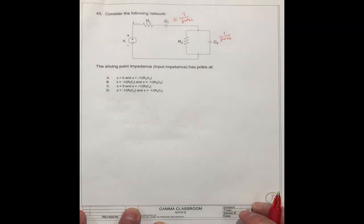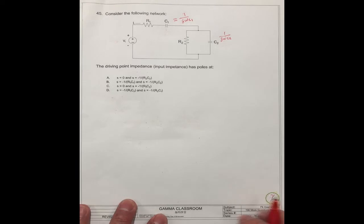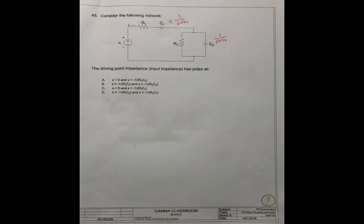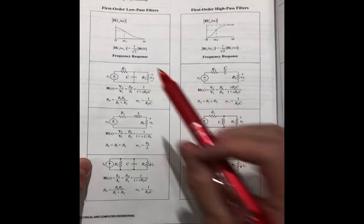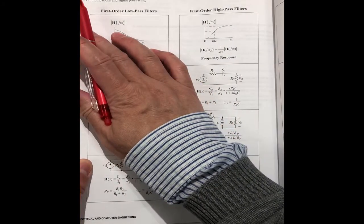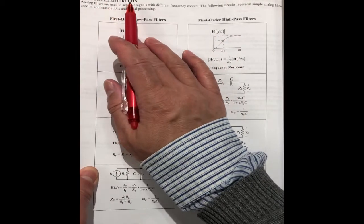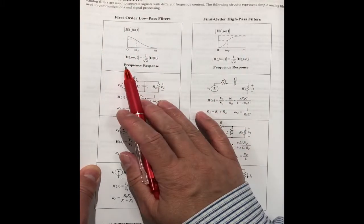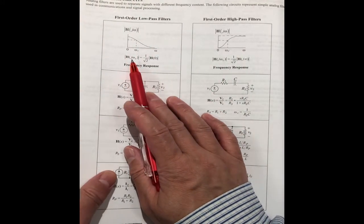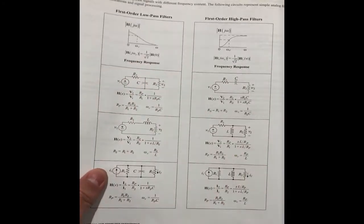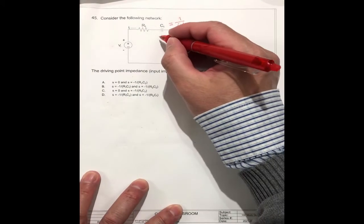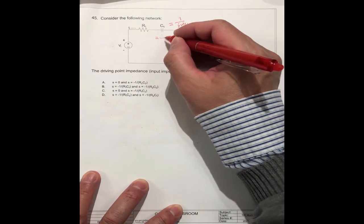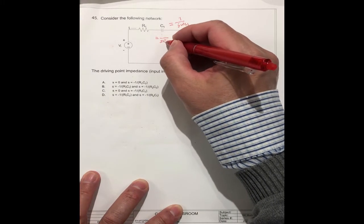But this is the network. We can use the frequency response S to replace, because this is the analog field sequence. So we use the frequency response to replace the jωC, so we can use equal to 1/(SC1).